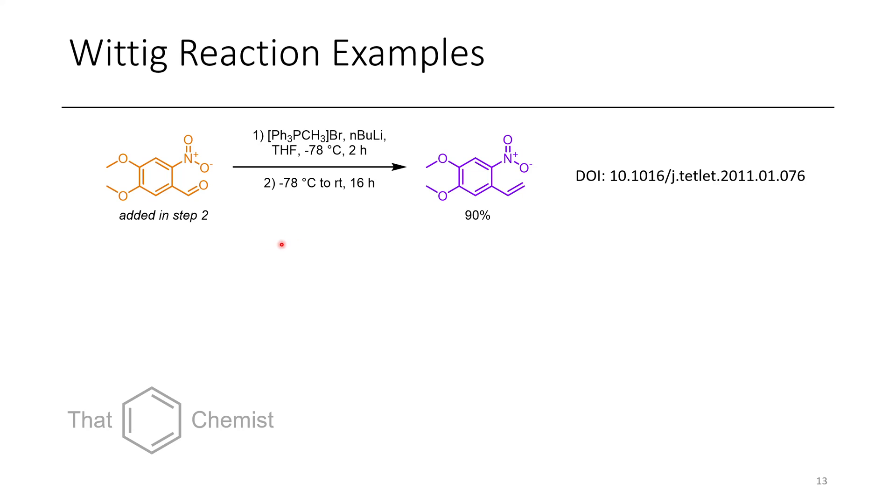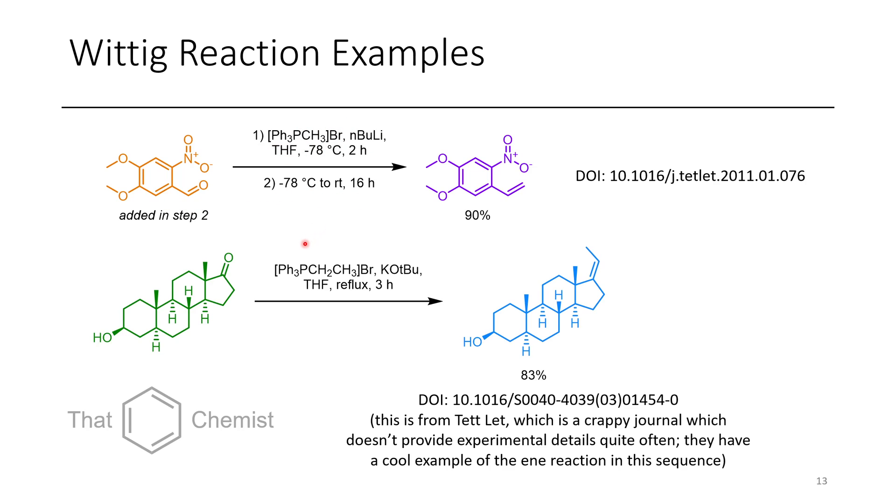So some examples of the Wittig reaction include the treatment of this dimethoxy nitro aniline containing aldehyde. This aldehyde is just converted into a methylene, just via methyl triphenylphosphonium bromide in the presence of n-butyl lithium. The initial step is where the deprotonation occurs, and the aldehyde is added in the second step.